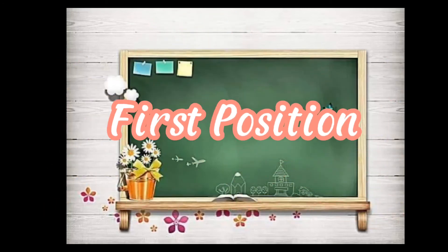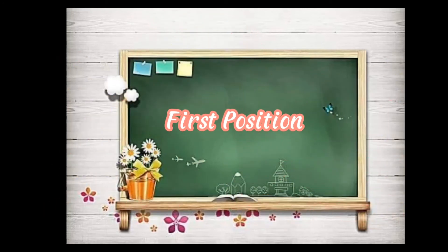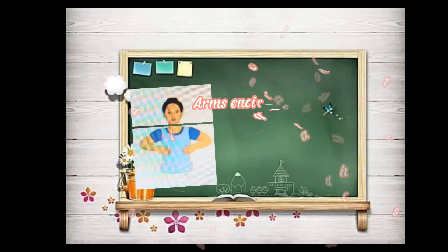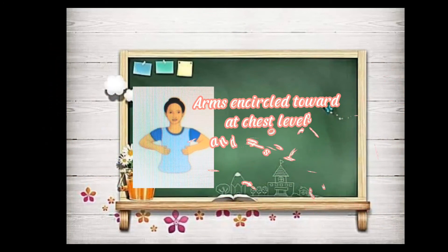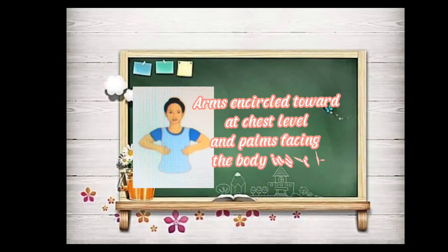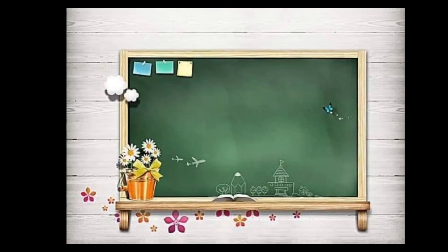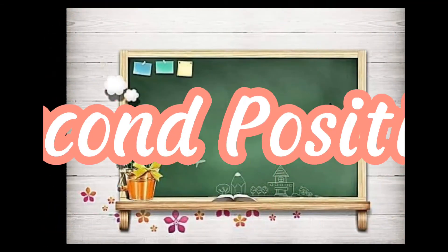First position: arms encircled forward at chest level and palms facing the body inward. Second hand position: arms raised sideward at shoulder level and palms facing upward.